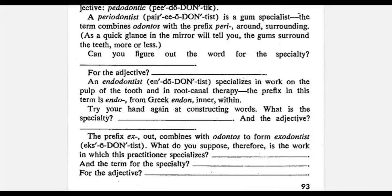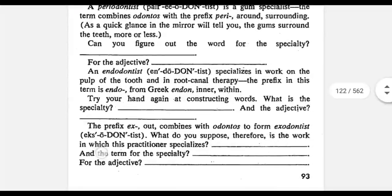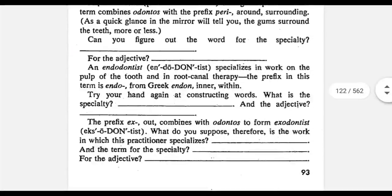The next word is periodontist. The word comes from the roots peri, meaning around or surrounding, plus odontos, meaning tooth, plus IST. So a periodontist is a gum specialist, because the gum is found around the tooth. The speciality is called periodontia and the adjective is periodontic.